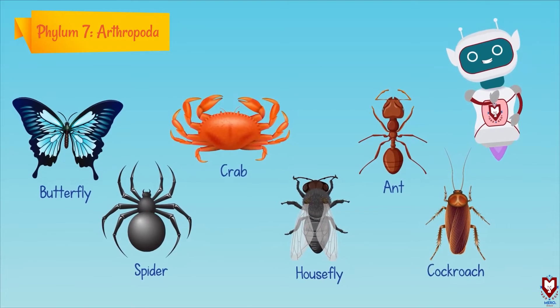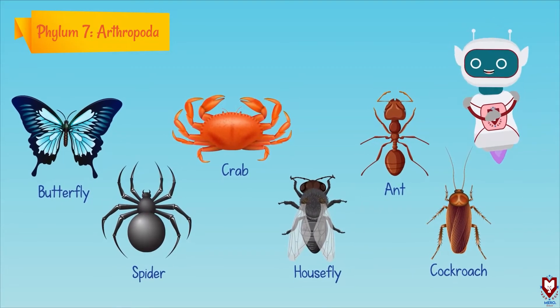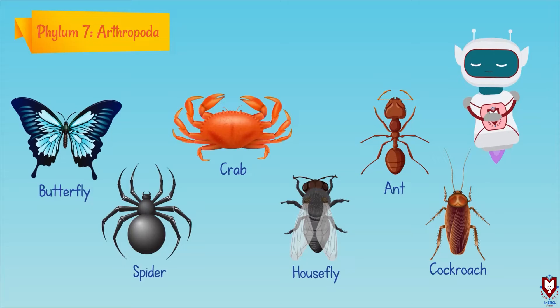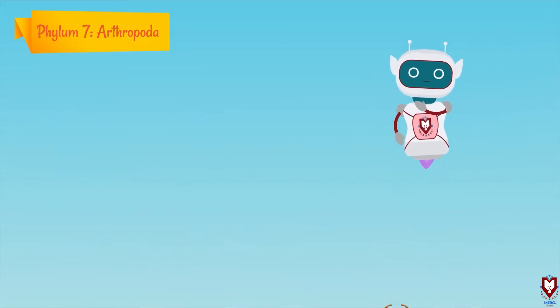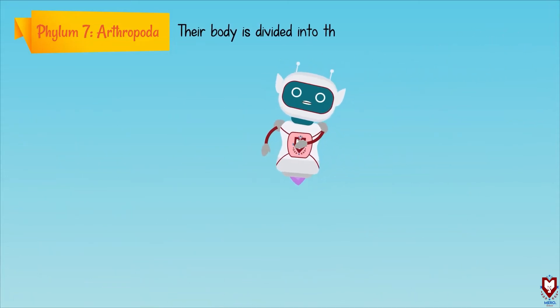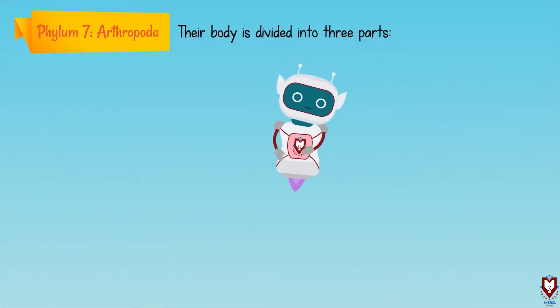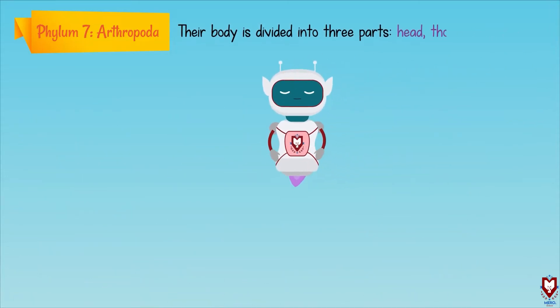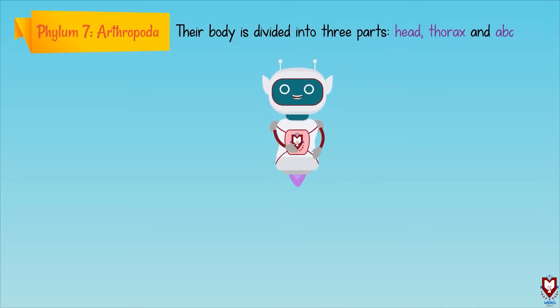Let's have a look at the characteristics of Arthropoda. Their body is divided into three parts: head, thorax, and abdomen.